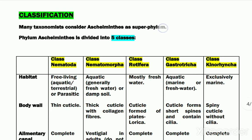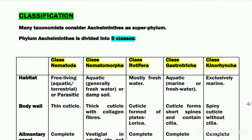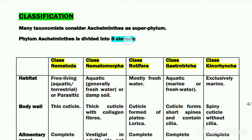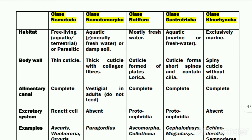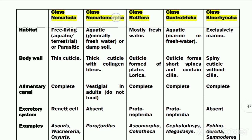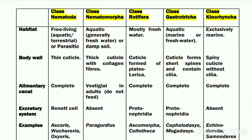Regarding classification: many taxonomists consider sk-helminths a super phylum, but we will follow the classification given by Hyman, who considered sk-helminths as a phylum only. Hyman divided sk-helminths into seven classes, out of which five are comparatively important, and we will study only these five classes.